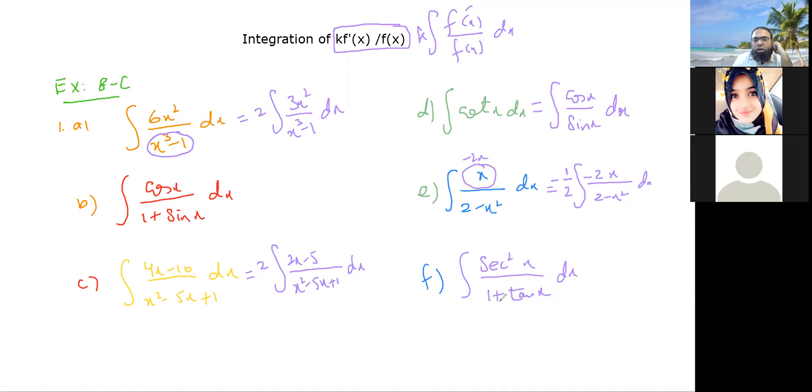And for the last one, this is clearly one plus tan x derivative is secant squared x. So all of these are exactly in this form where you can write the derivative.